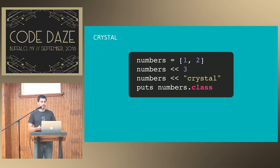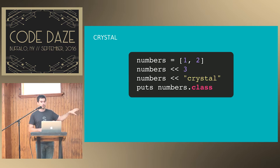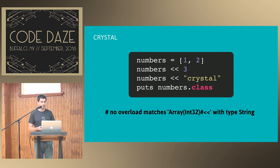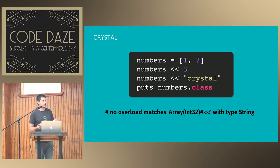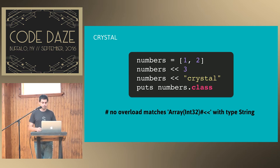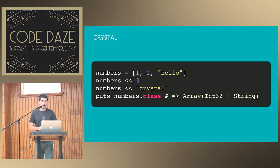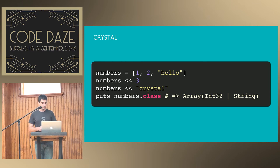Now, what if you want heterogeneous arrays? You have an array, you initialize it with two integers, you shovel an integer, and now you shovel a string into it. If you try to run this, it will blow up at compile time and say — it's a pretty readable error — that there's no overload matching the shovel operator between a string and an array of ints. So you cannot shovel a string into an array of ints. There are a couple of ways of working around it in Crystal. One is to pass in all the types you want when initializing the array — it will be an array of integer union with string.